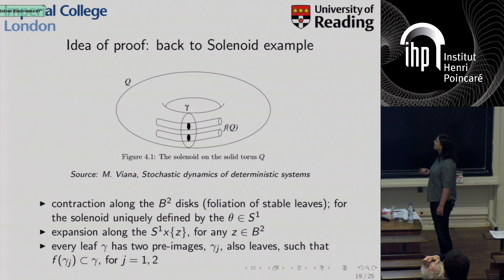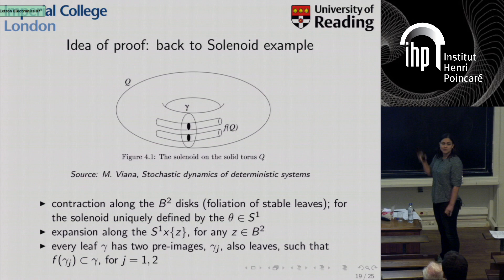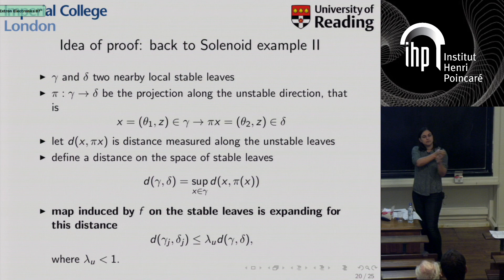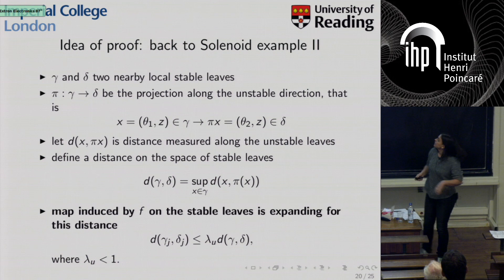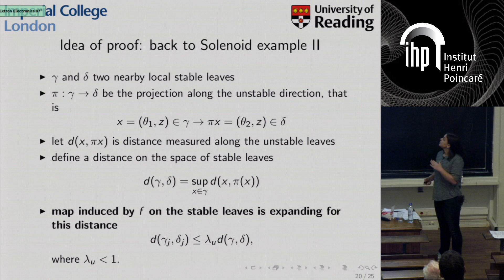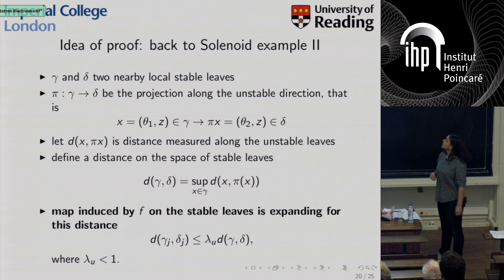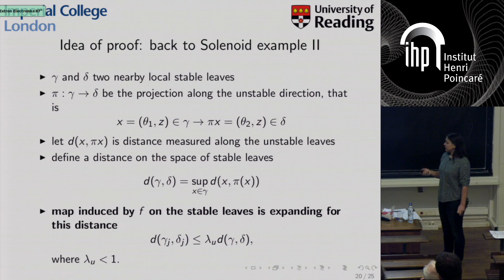Every unstable leaf — which we call gamma, delta, etc. — has two pre-images, visible as two black circles, just from the definition of the map. If we take two stable leaves close to each other, each will have two pre-images; we number them so that corresponding ones are close together. We then define a map pi going from gamma to delta, which is a projection along the unstable direction: mapping coordinates (theta_1, z) in gamma to (theta_2, z) in delta. We can define a distance along these leaves, and in this metric the map induced on the stable leaves is expanding — and this is the property we try to exploit.